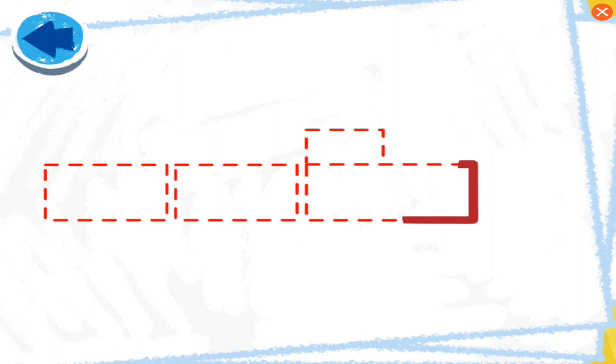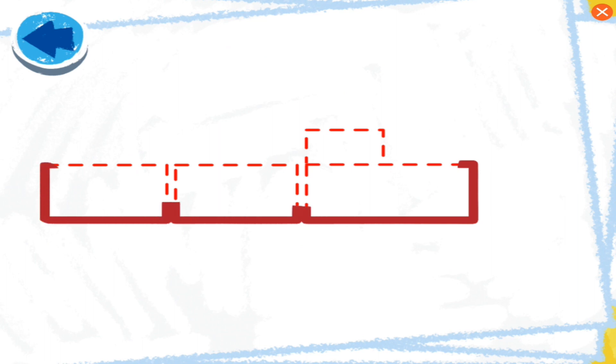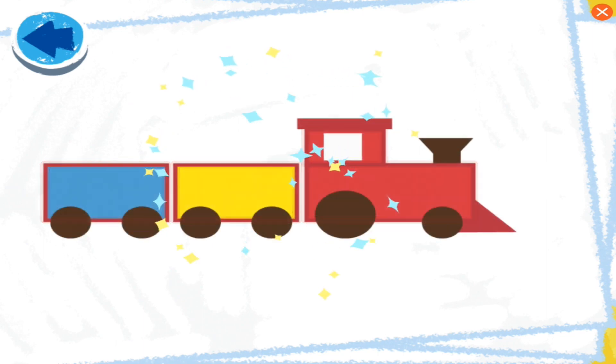This picture has rectangles! Boy, Elmo wonders what it is! Boy, Elmo can't wait to see what it is! Oh-ho-ho! Elmo sees! It's a train!